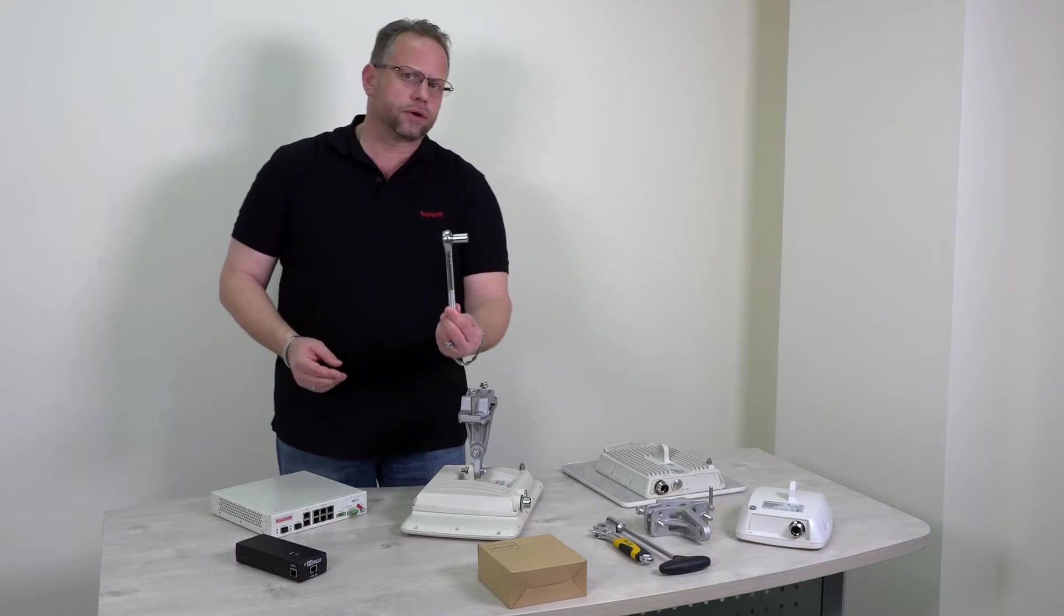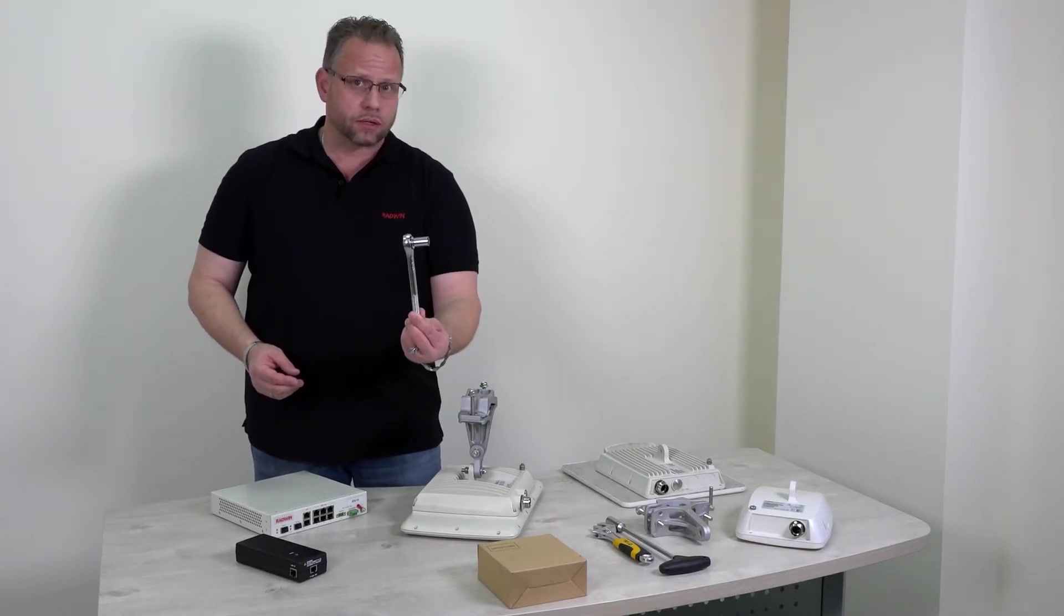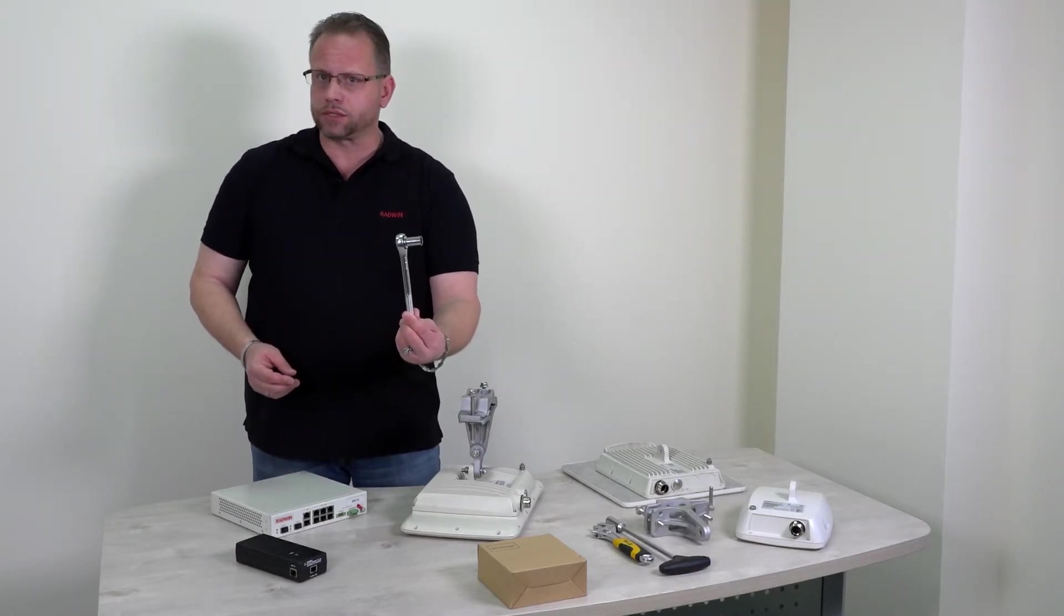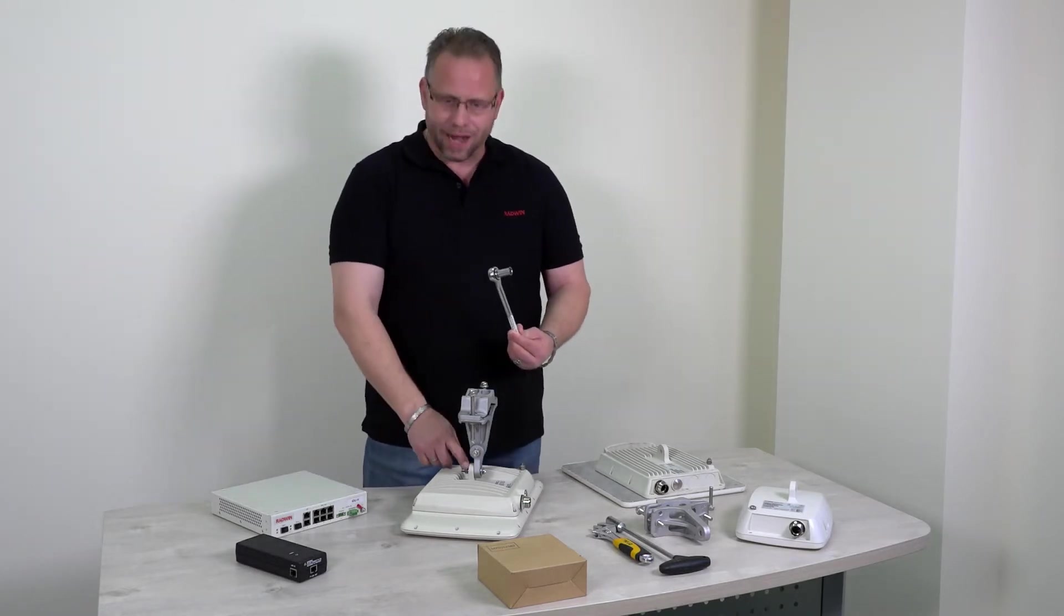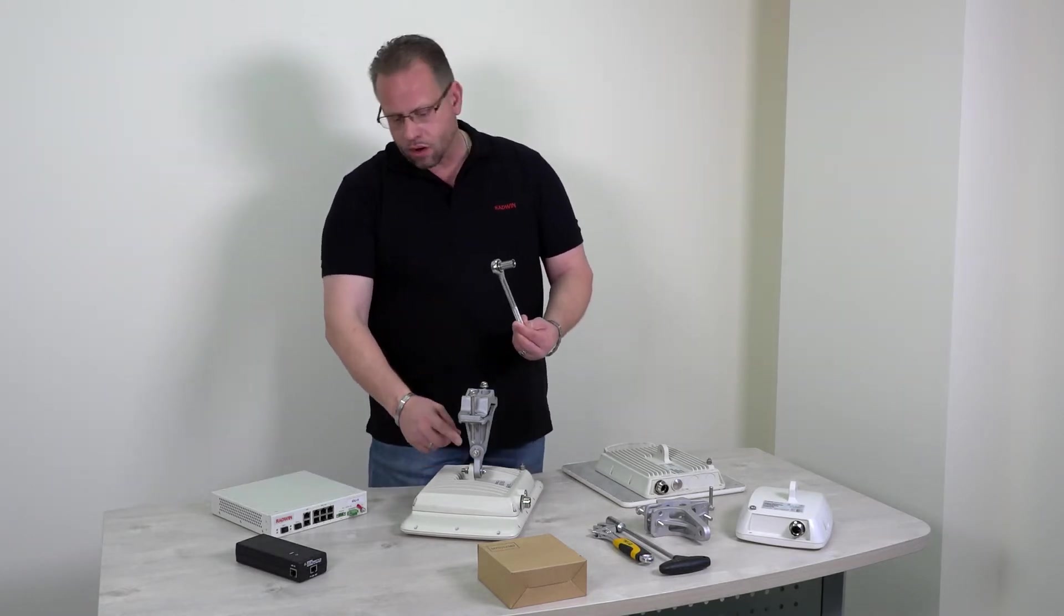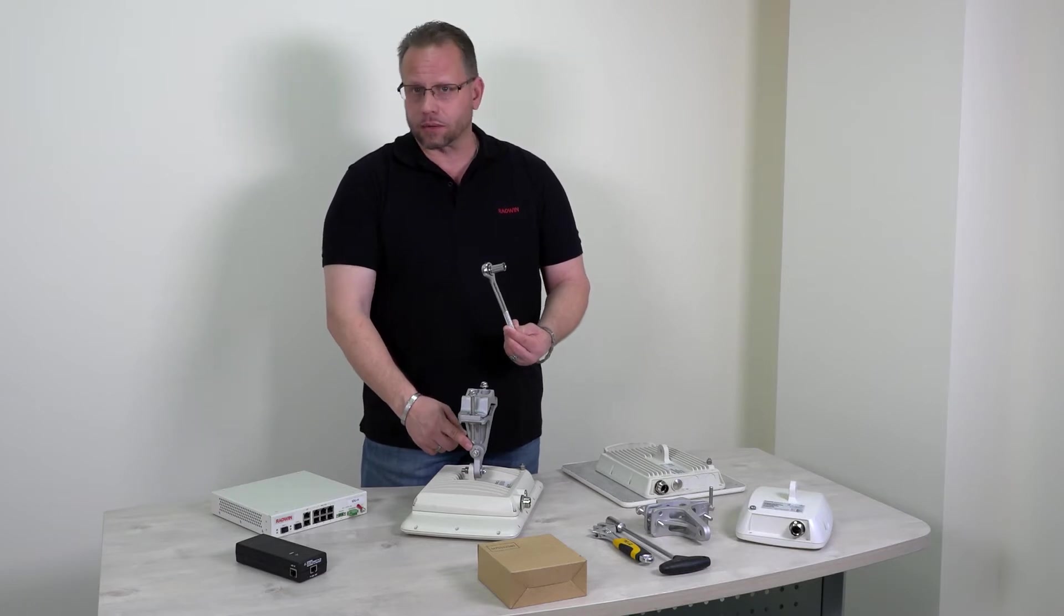Using a 13 millimeter wrench or a 13 millimeter socket would be the choice for tightening the nut on the Radwin bolted assembly.